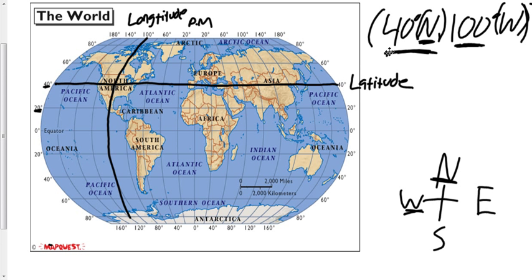Our point is going to be where the intersection occurs. So it looks like we're in Kansas or maybe Nebraska. All right, good. So that's 40 degrees north, 100 degrees west.